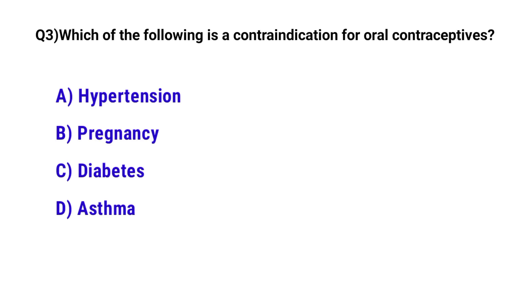Question number 3. Which of the following is a contraindication for oral contraceptives? The correct option is B: Pregnancy.